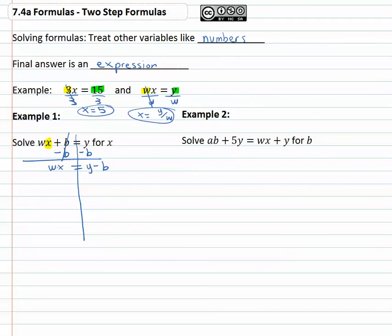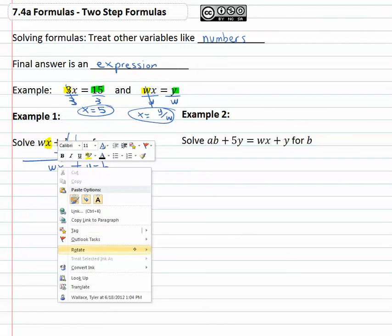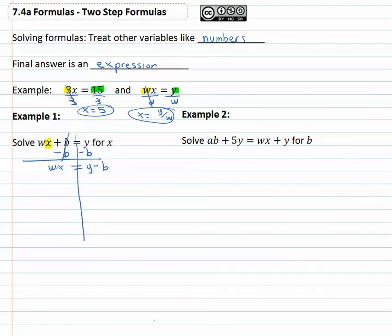We still need to get the x alone. Right now the x is next to the w, so it means x times w. So to get rid of the w, just like we would get rid of a number in front of x, we divide by it, so we will divide both sides by w.